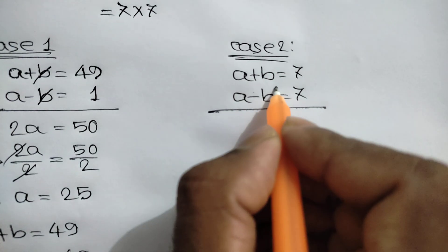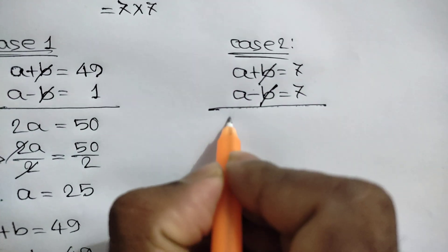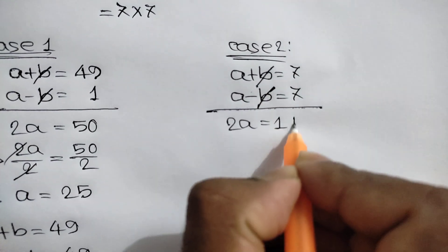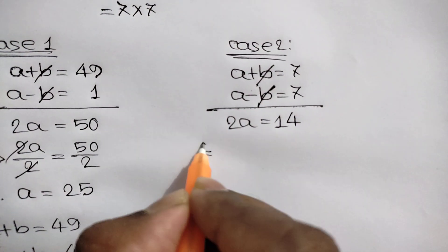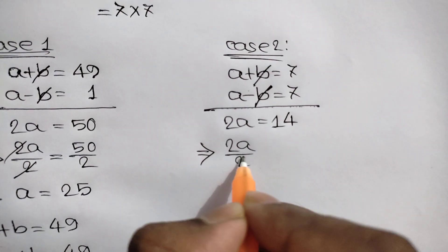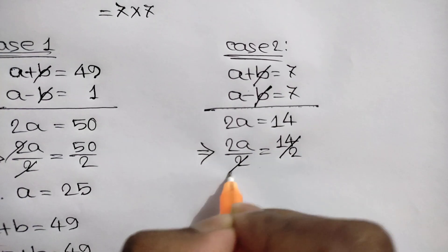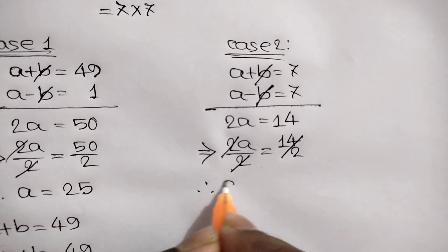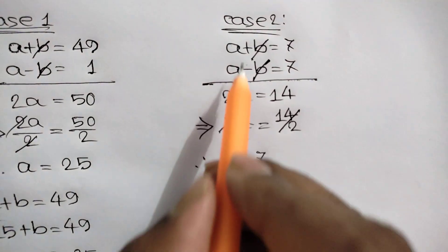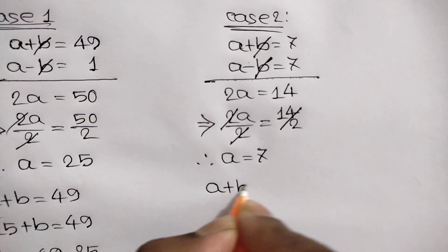For Case 2, similarly, adding the two equations, the b terms cancel out, giving 2a is equal to 7 plus 7, which is 14. Dividing both sides by 2, the value of a is equal to 7. From a plus b is equal to 7: